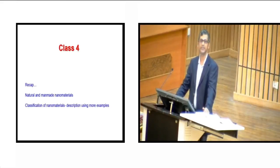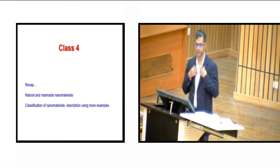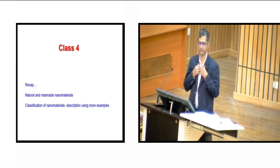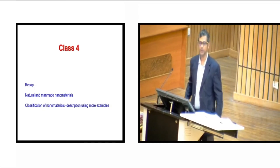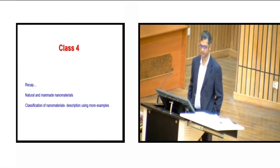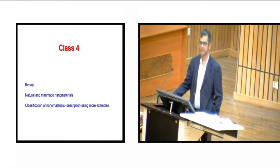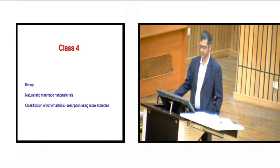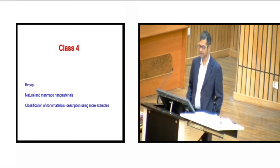Students, we are going to learn something new in this class — that is class 4. First I would like to have some recap of what we have done so far. We have talked much about natural and manmade nanomaterials, and at the end of the last lecture I talked about some classification and examples from that, and finally I talked about carbon-based nanomaterials. So let us first discuss these aspects, then we will go ahead with other things.